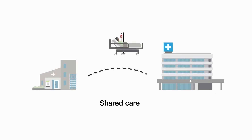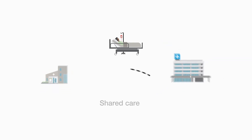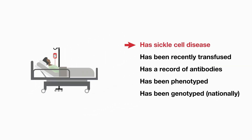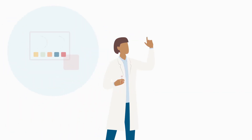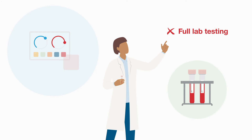Patients with SCD often have shared care and transfusion labs may not be informed that the patient has sickle cell disease, has been recently transfused, has a record of antibodies, has been phenotyped, or has been genotyped nationally. HTRs can also be overlooked as they often present as a sickle cell crisis. These combined factors mean the patient doesn't always get the full laboratory testing required, or blood that is negative for the required antigens.